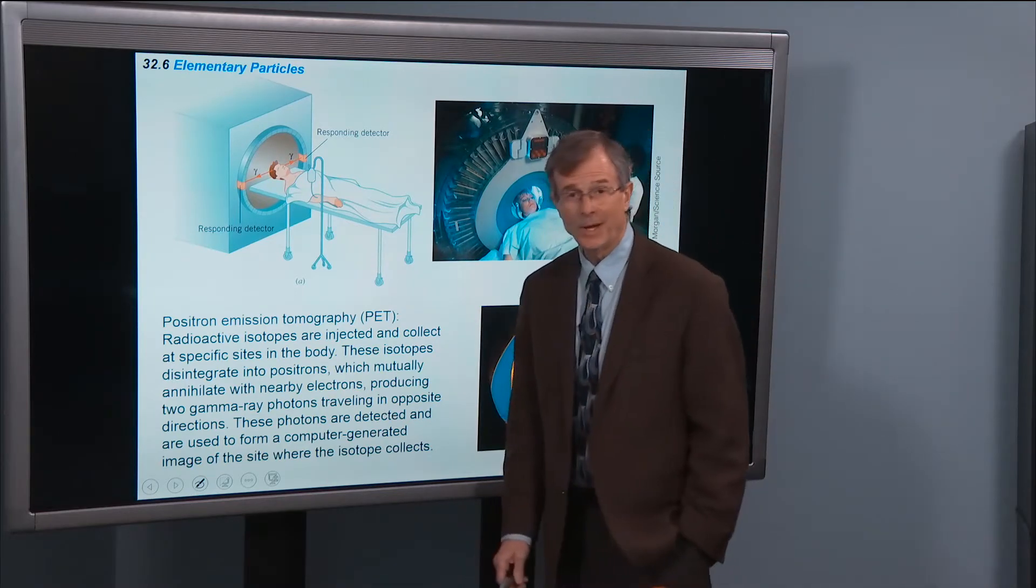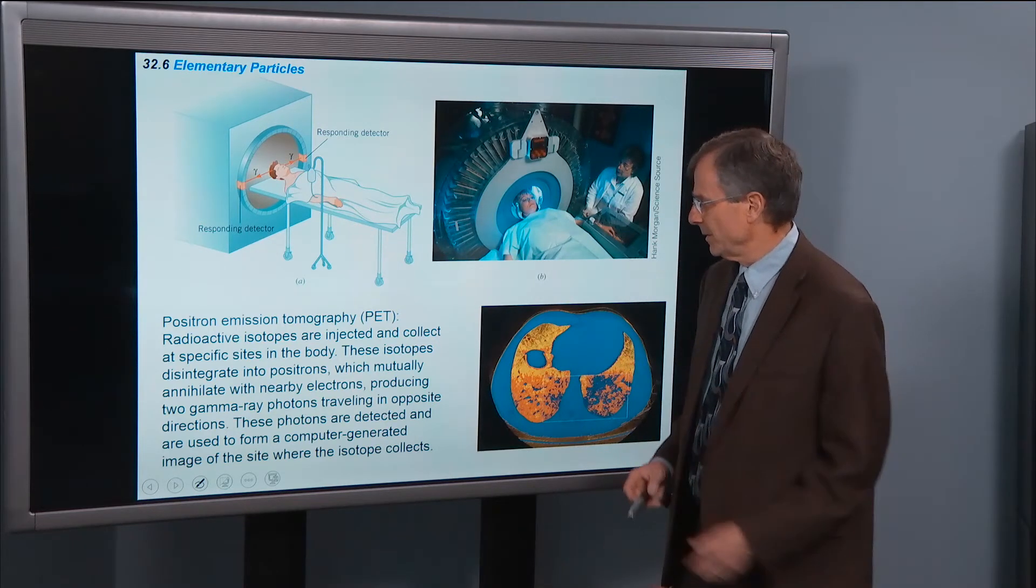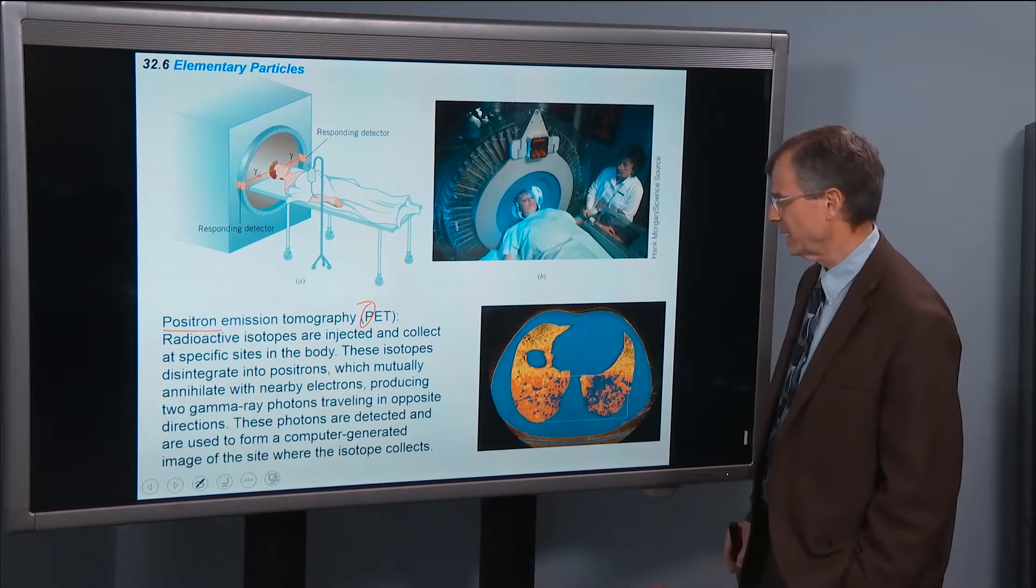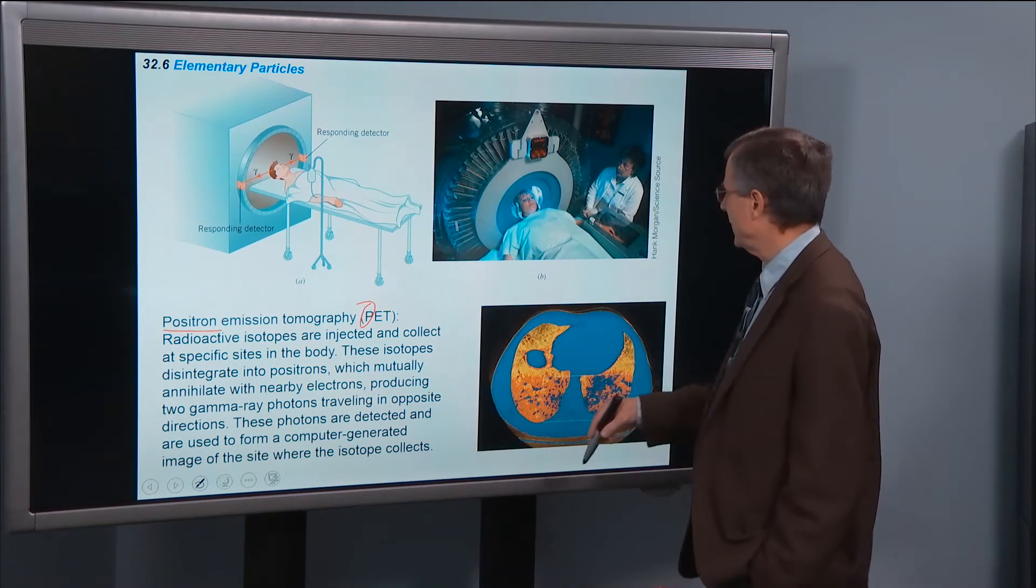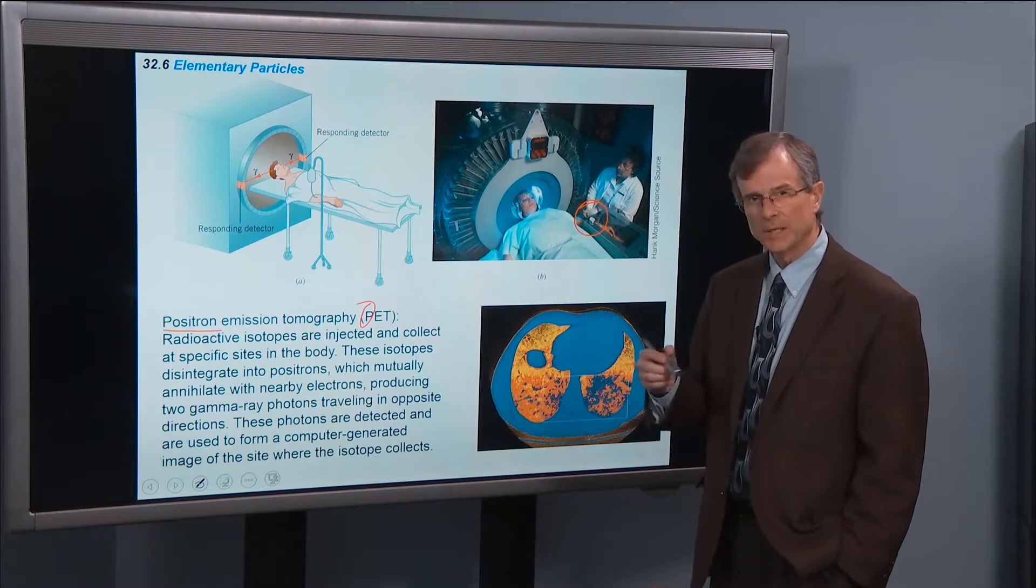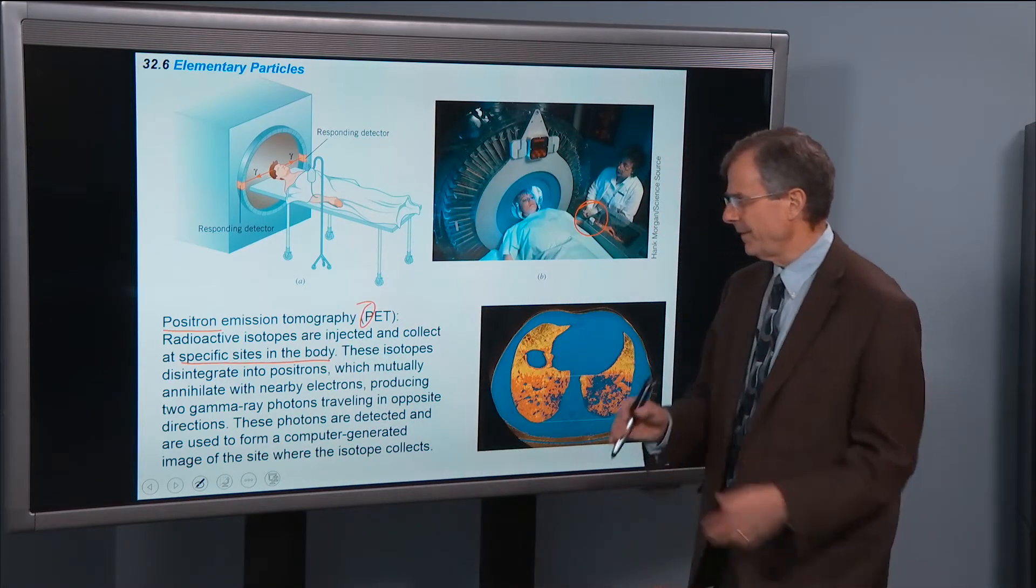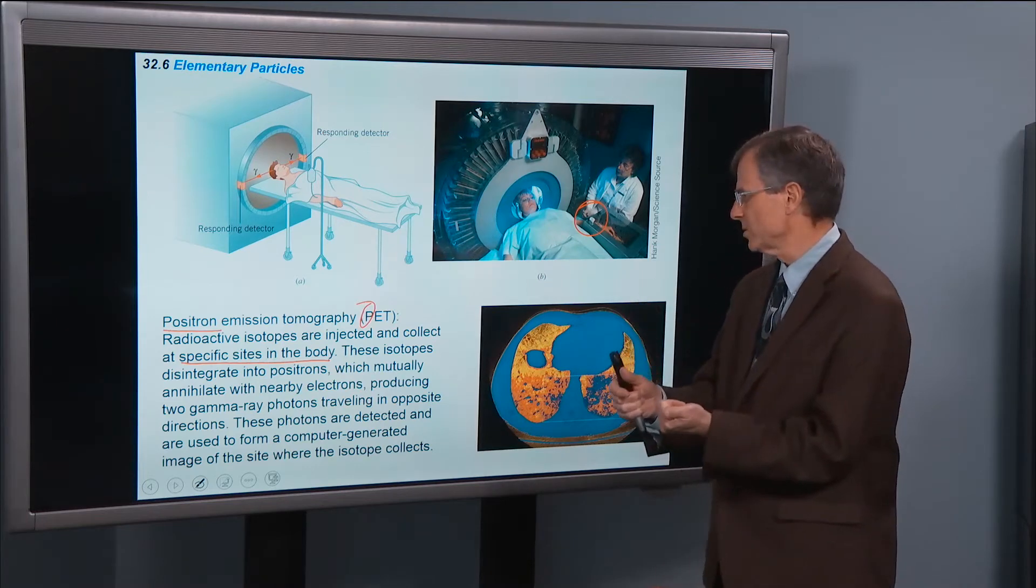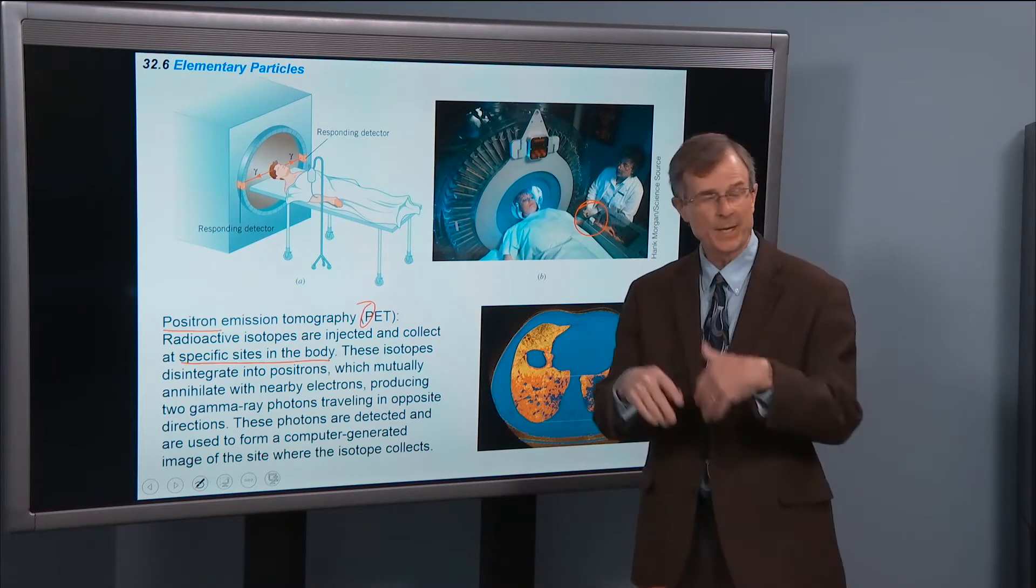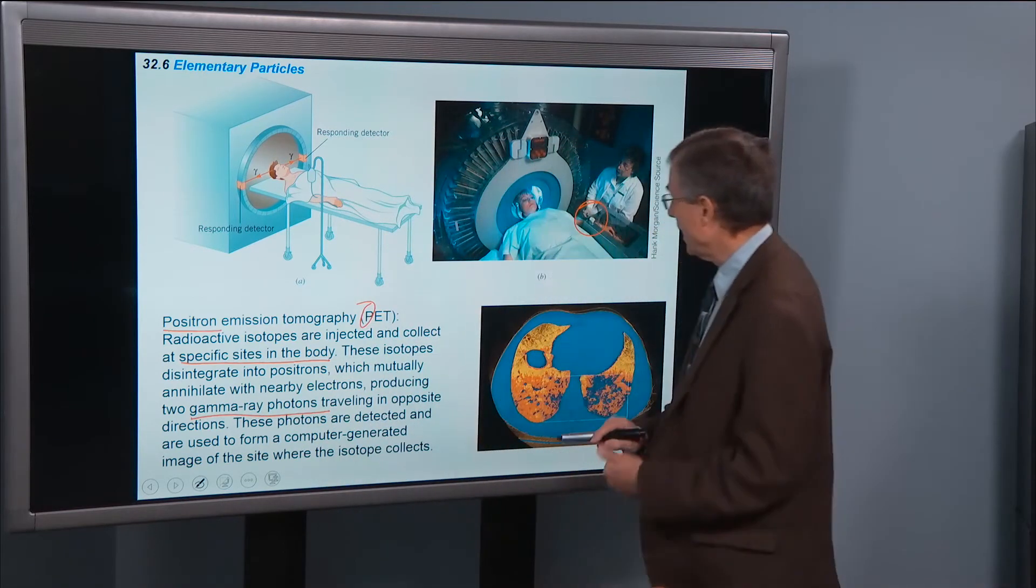Why should I worry about positrons? Well, have you ever heard of a PET scan? The P in PET is positron. So you inject a radioactive isotope into the body, and those isotopes collect at specific sites in the body. That radioactive isotope disintegrates into positrons, and then those positrons annihilate with the nearby electrons via the annihilation reaction that we just talked about.